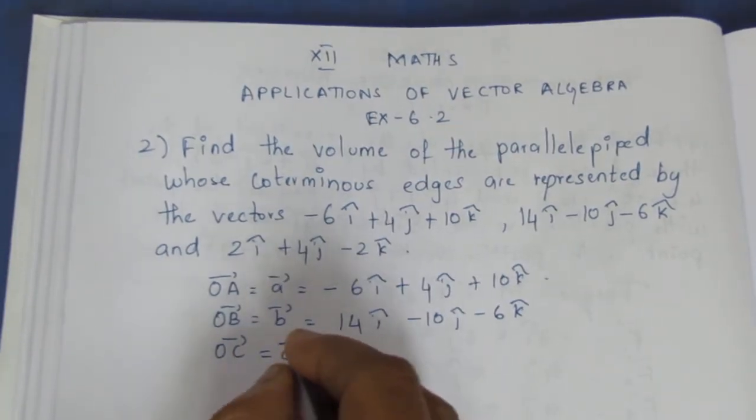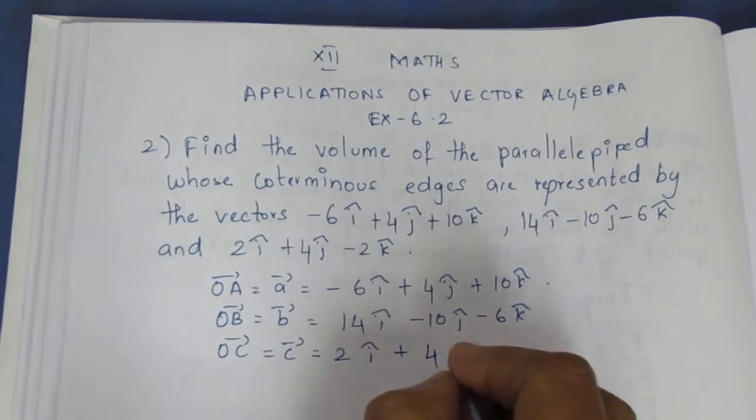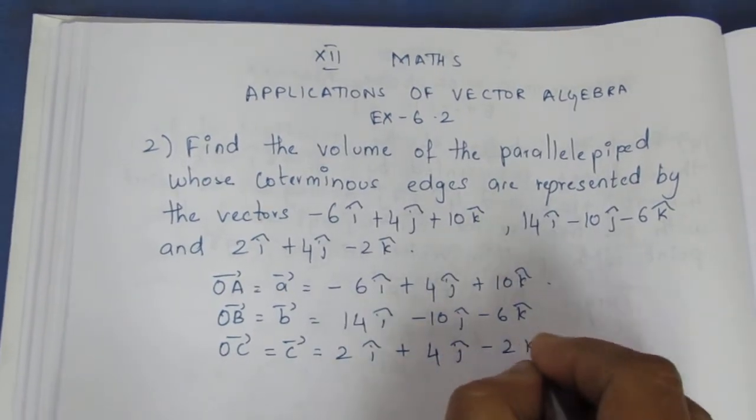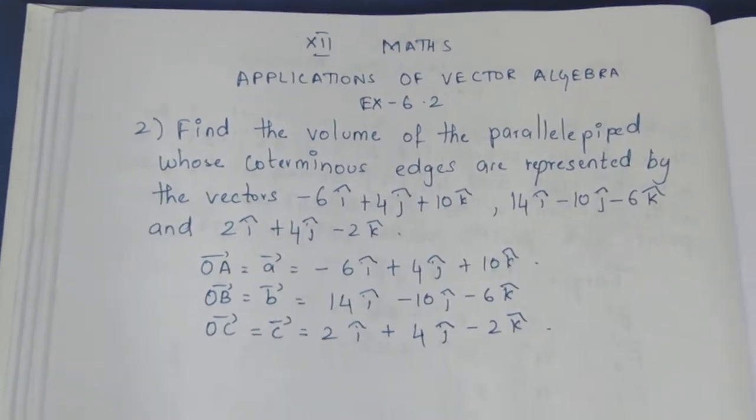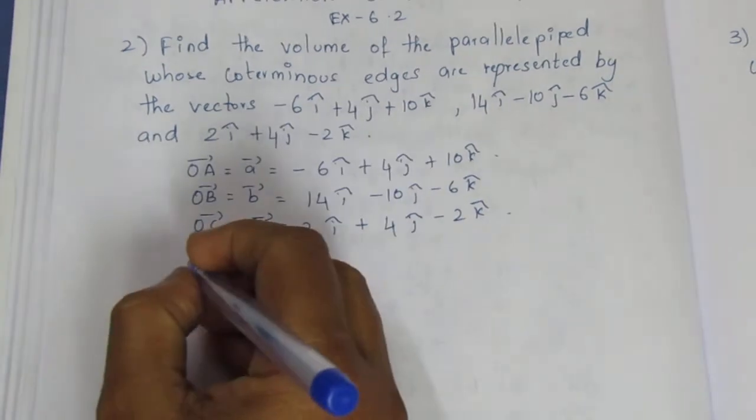OC vector, C vector, is equal to 2i cap plus 4j cap minus 2k cap. And we have a formula for a parallelepiped when it is given coterminus edges.